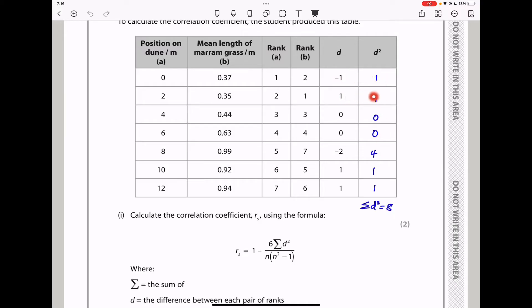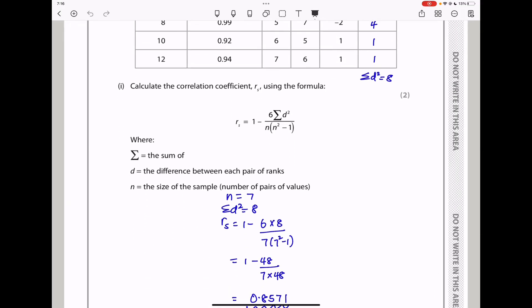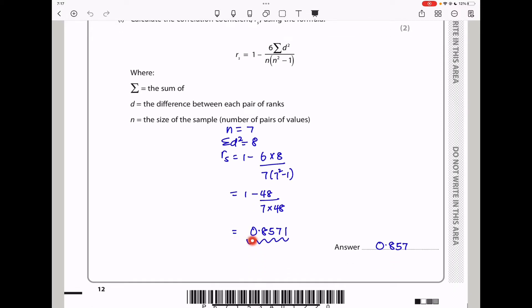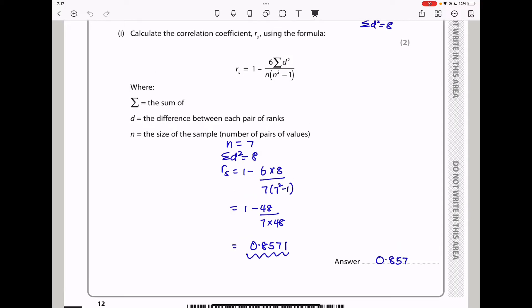However, we do not know d squared, so we have to fill the table. That squared gives us 1, that squared gives us 1, that squared gives us 0, that squared is 0, that squared is 4, that squared is 1, and that squared is 1. When we add up everything here, we get summation of d squared is equal to 8. So I used 8 in my calculation. Like I said already, n is equal to 7, so I mentioned d squared is 8. So rs should be 1 minus 6 times 8 divided by 7 into 7 squared minus 1. And using my calculator, I got 0.8571, which I rounded off to 0.857. And that was my answer. This is my calculated value.